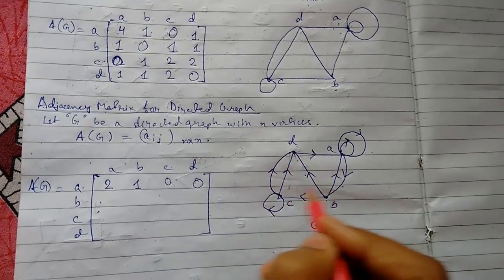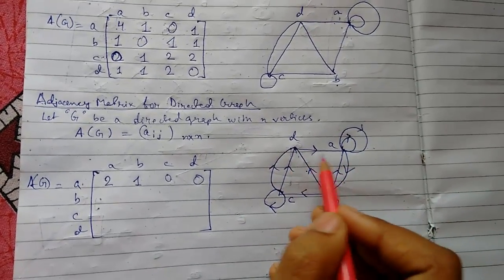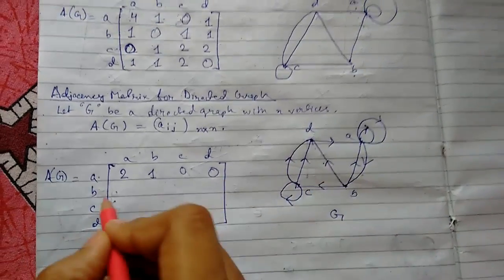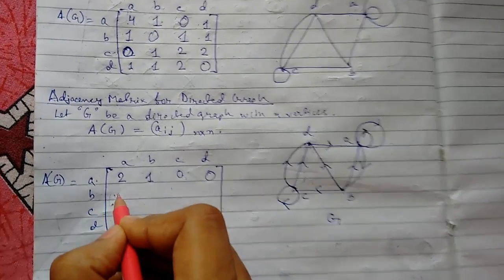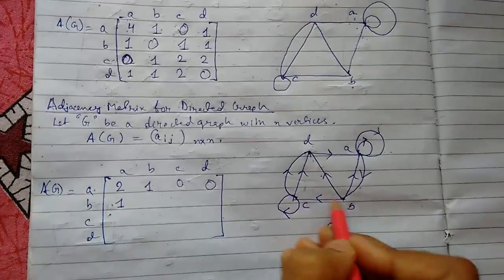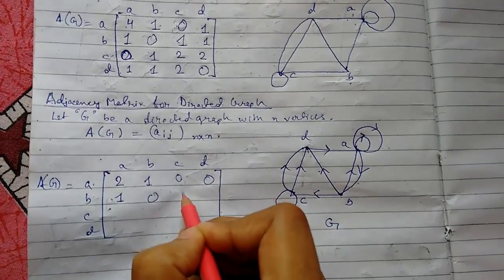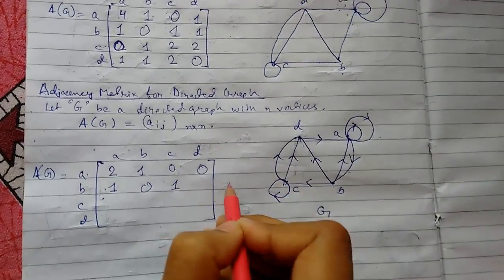Zero for no path, it is one for path connected with arrow. Now b to a, there is one path. b to b, no path. b to c is one path, and b to d is one path.